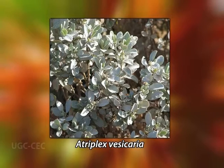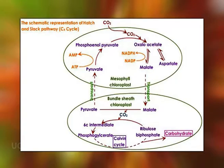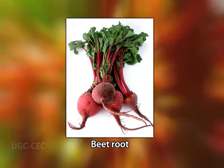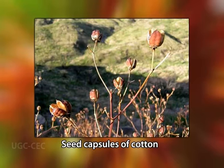Sodium requirement was first demonstrated for the bladder saltbush Atriplex vesicaria, and it was concluded that sodium is generally essential as a micronutrient for plants having the C4 photosynthetic pathway, as it regulates the transport of pyruvate — a critical intermediate in the C4 pathway. Sodium has a positive effect on root growth in beet and celery. Seed capsule formation in cotton is reported to depend on sodium status.